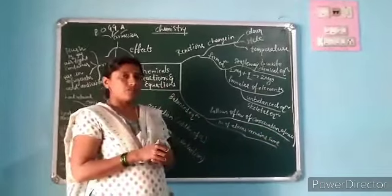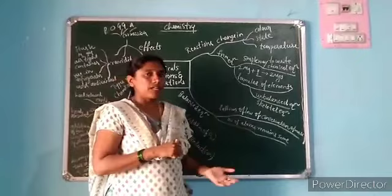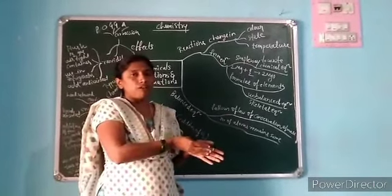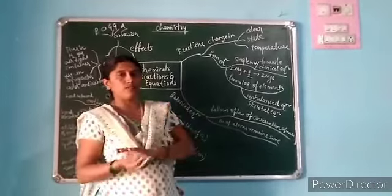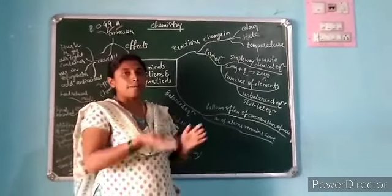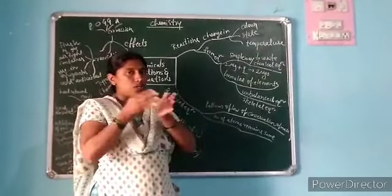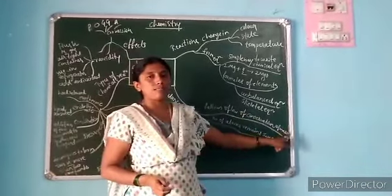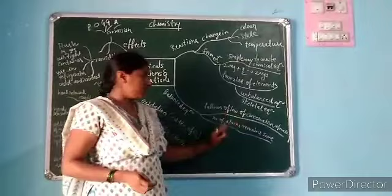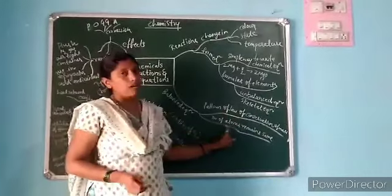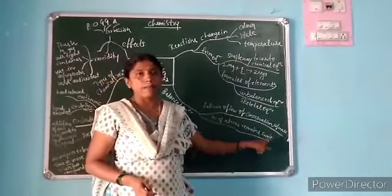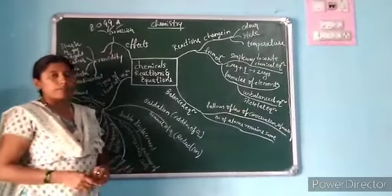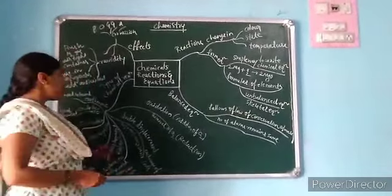The law of conservation of mass means: mass can neither be created nor destroyed — one form of mass is converted into another form. For example, the mass of the reactants should be equal to the mass of the products. The number of atoms remains the same in a balanced chemical equation.